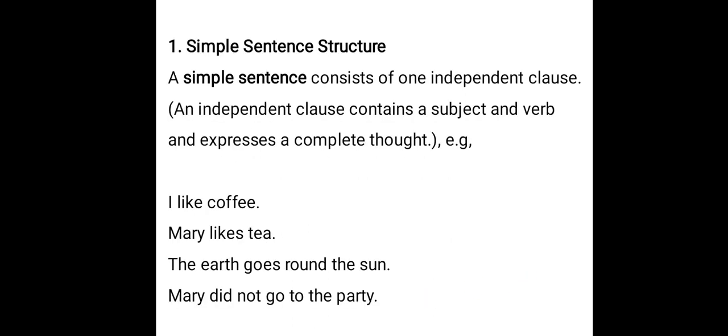Starting with the first one — simple sentence structure. A simple sentence consists of one independent clause. First, we should discuss what a clause is. A clause is a group of words that contains a subject and a verb. A sentence is a group of words that expresses a complete thought. A clause contains a subject and a verb, but it may or may not express a complete thought.